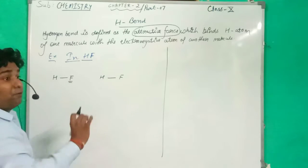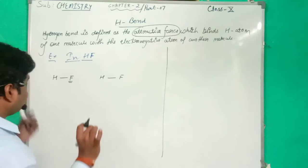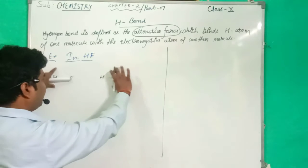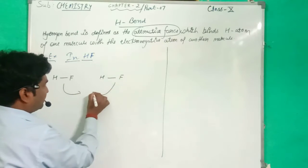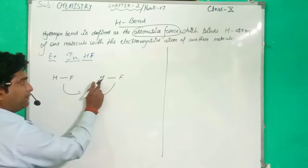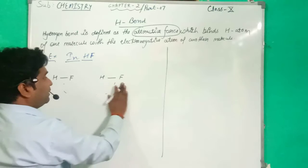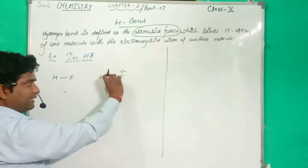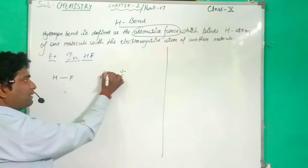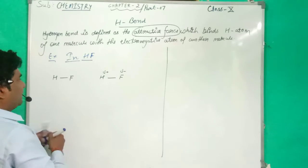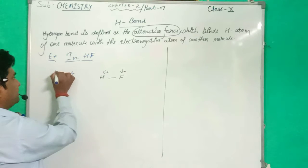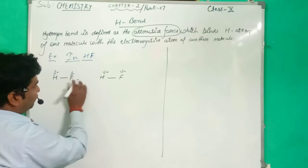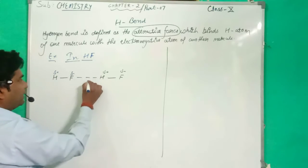This Fluorine atom is the most electronegative element, and this is the Hydrogen atom. When both molecules come closer, an attraction force will generate between the Hydrogen and Fluorine. Because Fluorine is the more electronegative element, Fluorine gets a partial negative charge, and Hydrogen gets a partial positive charge. So the negative and positive charges attract each other.